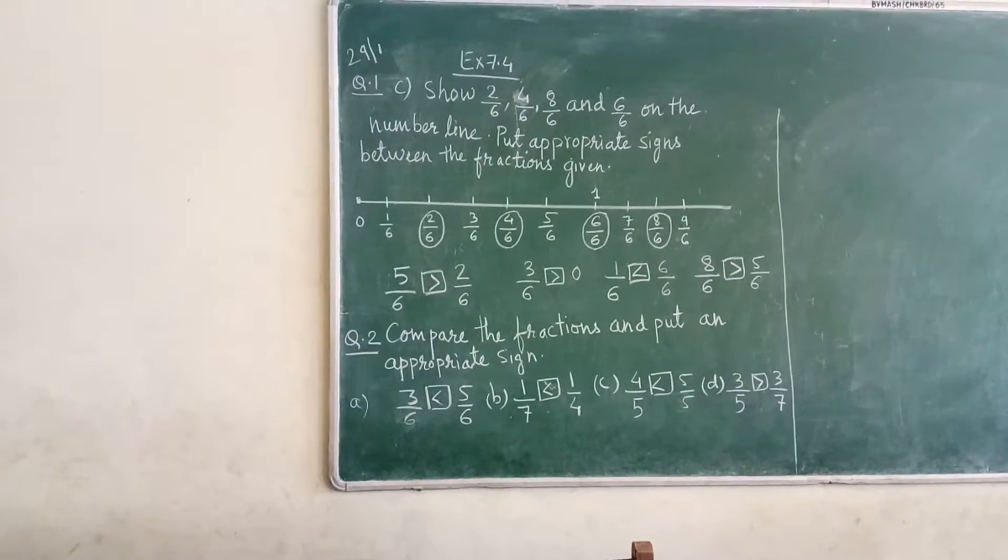Highlight karne ke liye, the fractions they are asking in the question, that we have to circle. Now the next part of the question is put appropriate signs. So what you have to do?